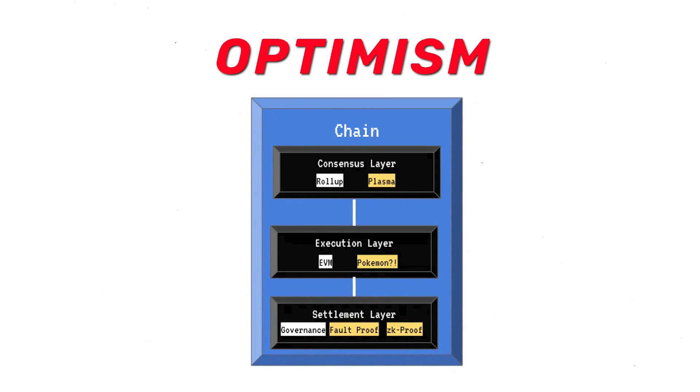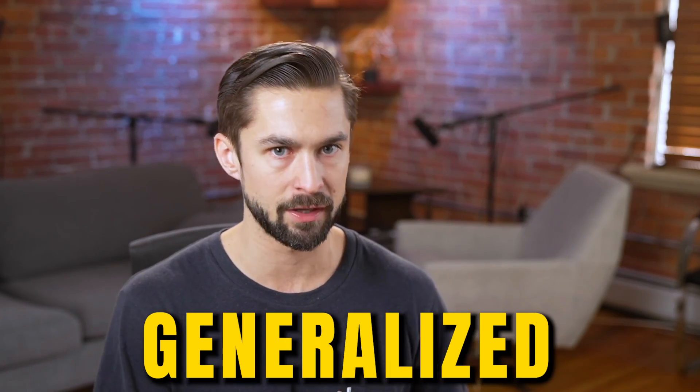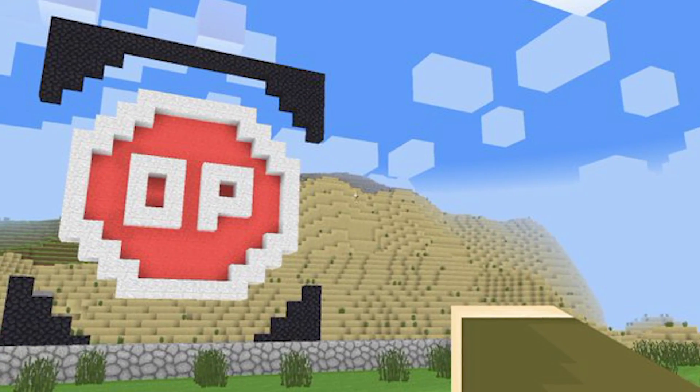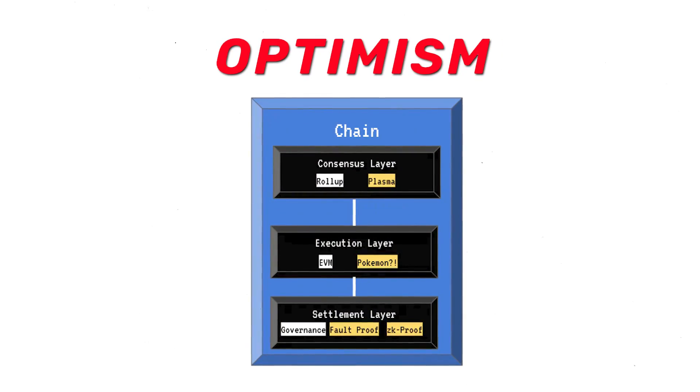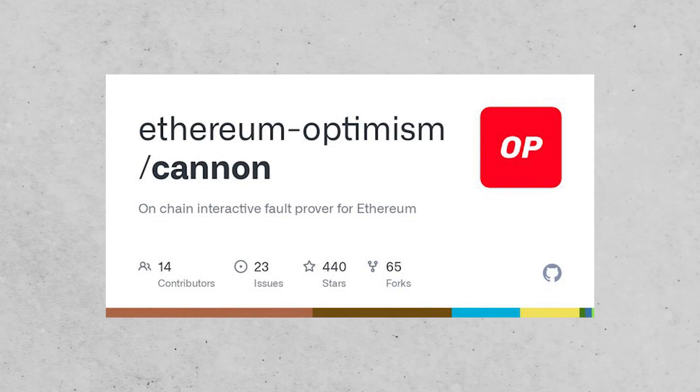The next layer in the OP stack is the execution layer, where the Ethereum virtual machine exists, or Move, that new virtual machine everyone's so hyped about. What slots into the execution layer can be generalized or application specific. The last layer is the settlement layer, which solves how you prove the withdrawal out of the Layer 2 back to the Layer 1. Fault proofs for optimistic rollups, ZK proofs for ZK rollups. Optimism has the Canon fault proof, Arbitrum has their own fault proofs, ZK Sync has their own provers.